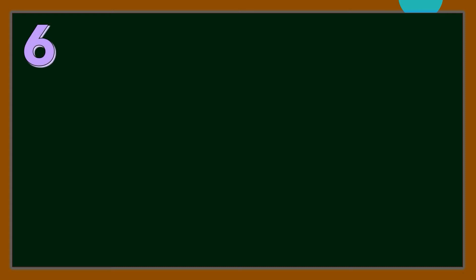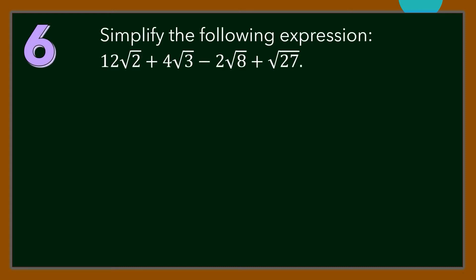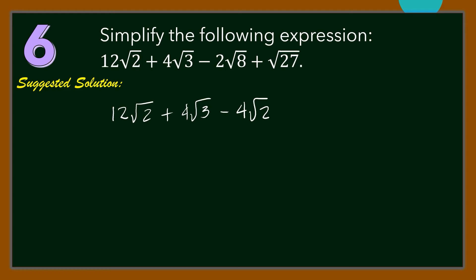Number 6: Simplify 12 square root of 2 plus 4 square root of 3 minus 2 square root of 8 plus square root of 27. For our solution, let us simplify 2 square root of 8 and square root of 27. 2 times square root of 8 is 4 square root of 2, while square root of 27 is 3 square root of 3. Hence, we can combine 12 square root of 2 minus 4 square root of 2, which equals 8 square root of 2, and 4 square root of 3 plus 3 square root of 3, which equals 7 square root of 3.